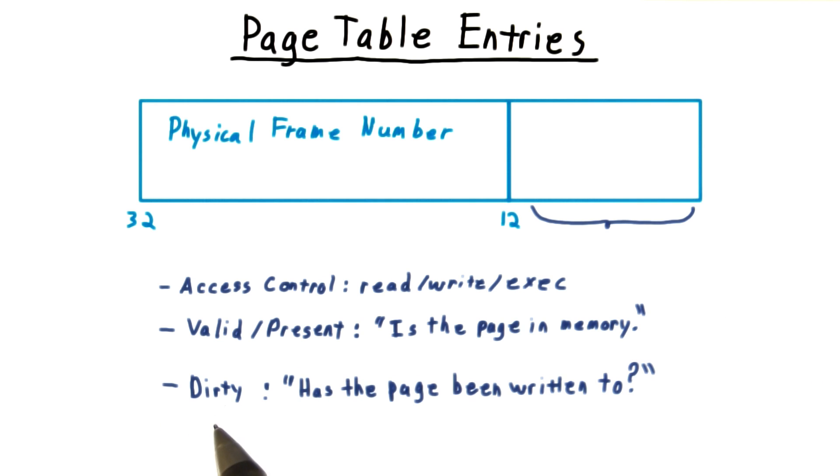One of these bits also indicates whether the page is dirty. That is, has it been written to since it was loaded from disk? If not, then if it becomes necessary to evict this page from memory, there is no need to write it to disk if it's already there. A nice optimization. Sometimes a bit or two will also control how caching of this page is done.